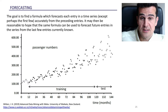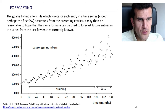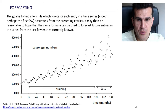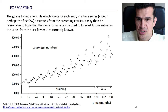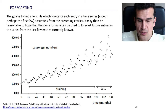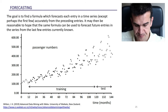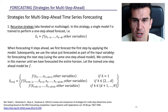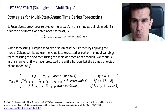The idea is the same as usual: we're going to use some training set to fit a model that captures hopefully most of the relationship between the input variables and the output variable, and then we're going to hope that this relationship stays the same in the future so we can use this model to make predictions or forecasts. Usually when we deal with time series we're not interested in forecasting just one time step ahead but we would like to forecast several time steps ahead.